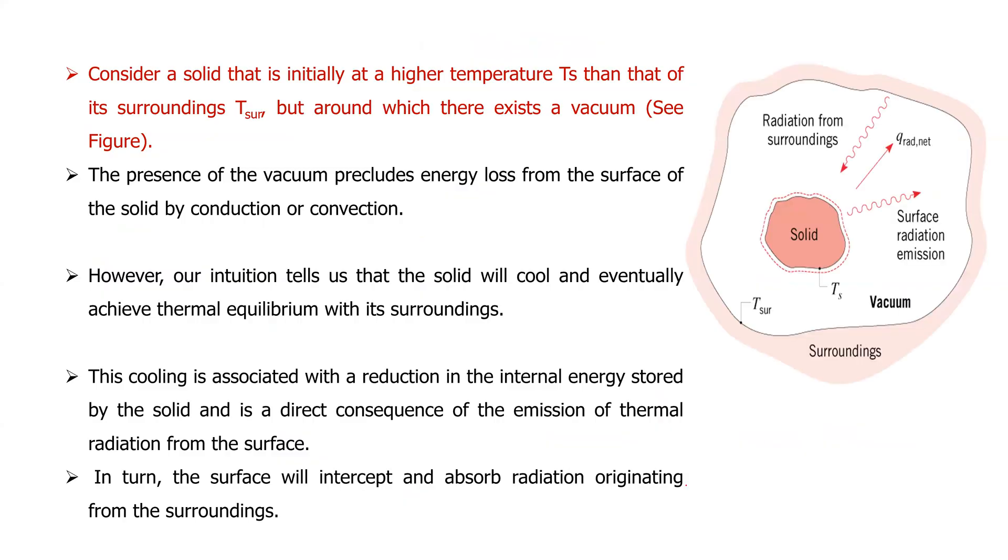Now, consider a solid that is initially at a high temperature Ts. You can see here in this diagram, this is a solid. Then that of its surroundings and the temperature of surrounding is Tsur. This is the surroundings. Their temperature is Tsur and this is a solid and its temperature is Ts. And around which there exists a vacuum. So inside, between the surrounding and solid, there is only vacuum.